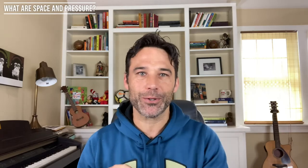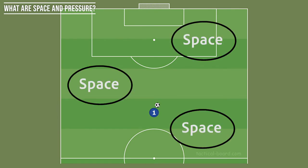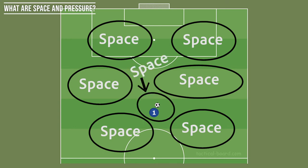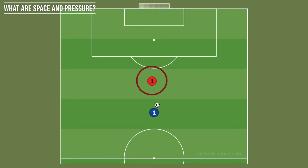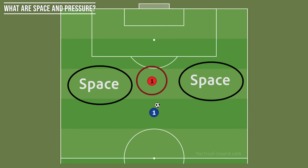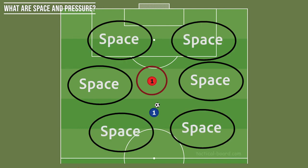Here is an excruciatingly simple example to illustrate that. If we put one player on the field with the ball and there are no other players, then everywhere on this field is open space, even the area where the player is standing. If we drop a defending player in, now we have an area of pressure and everywhere else is space — outside here, behind the defender, also behind the player with the ball. The further this player gets away from the pressure, generally speaking, the more space they have.